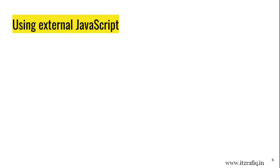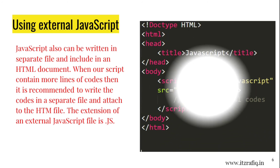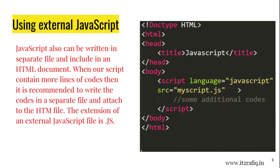Using external JavaScript: JavaScript can also be written in a separate file and included in an HTML document. When our script contains more lines of code — suppose our script contains a thousand lines of code — then adding it in the HTML document only will be quite confusing. So we can keep the code in a separate file. We save that file in .js format. For example, if I save the file as myscript.js, then I can use the line: script language='javascript' src='myscript.js' to call that external file.